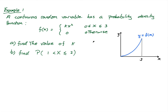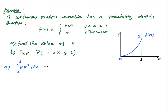The first question says find the value of k. It's between zero and three, and it's zero otherwise, which means the variable has to be between zero and three. This tells me the total area has to equal one, because the probability that it's between zero and three is one — it's guaranteed. So I can say that the integral of kx² from 0 to 3 dx has to equal one.